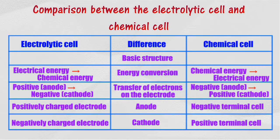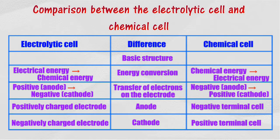The anode in the electrolytic cell is positively charged, while in the chemical cell it is the negative terminal. The cathode in the electrolytic cell is negatively charged, while in the chemical cell it is the positive terminal.